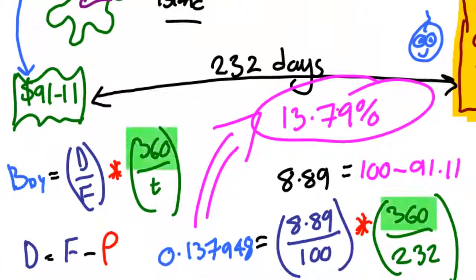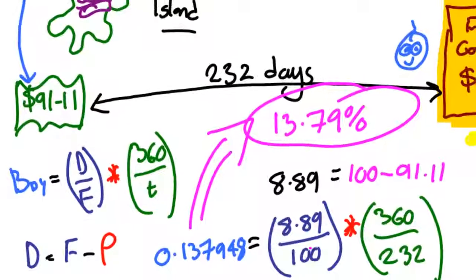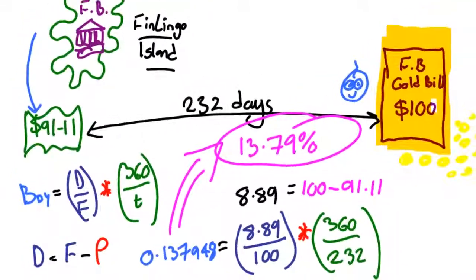So why the 360 rather than the actual number of days in a year, whether that's 365 or 366 in a leap year? Well,